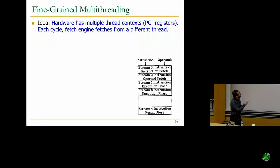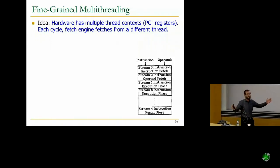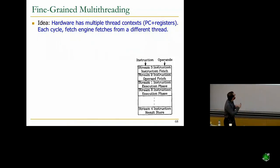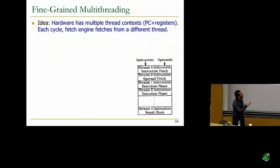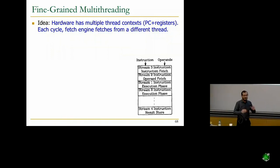The idea is hardware has multiple thread contexts. You have multiple program counters, multiple register files, one for each thread. Each cycle, the fetch engine fetches from a different thread. You never fetch from the same thread until the instruction gets out of the pipeline. So you only have one instruction from the same thread in the entire pipeline. Everything else is from different threads.